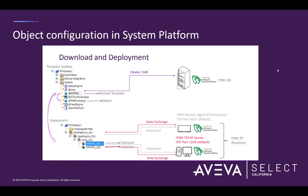The object configuration workflow in System Platform is fairly straightforward. It involves importing the ITME ViewApp object from the object library and creating a derived template from it — you can see the derived template in the template toolbox right here, HMI TR1. This derived template allows you to either import an edge project that you created in the standalone edge environment to edit it, or to create a new edge project from scratch. In a lot of ways, it works very similarly to InTouch WindowMaker in that opening this derived template will essentially overlay the edge development environment on top of the System Platform IDE.